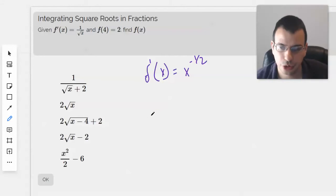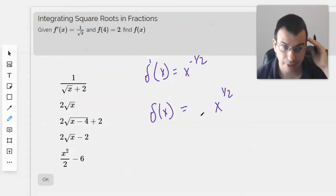So we'll do the power rule. Negative 1 half plus 1 is positive 1 half. Then we'll divide by 1 half. So dividing by 1 half is the same as multiplying by 2. Then we'll add a constant c.